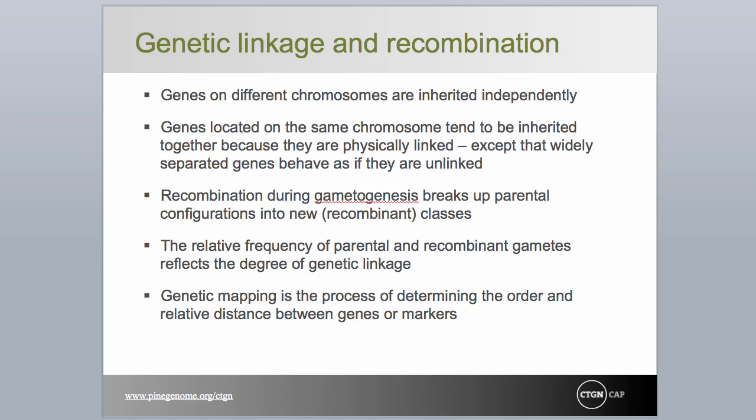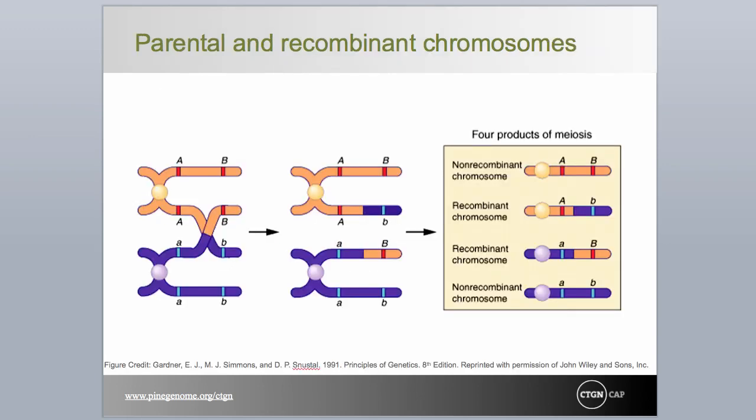Genes located on the same chromosome tend to be inherited together simply because they are physically linked. If the integrity of chromosomes could be retained through generations, large blocks of genes would remain perpetually linked through time. Such is not the case, of course. It is common for chromosomes during germ cell production, or gametogenesis, to undergo recombination between homologous pairs through the process called crossing over. As depicted in this figure, crossing over results in the exchange of materials between homologous chromosomes.